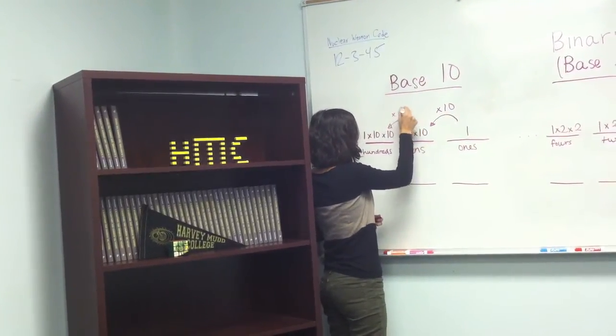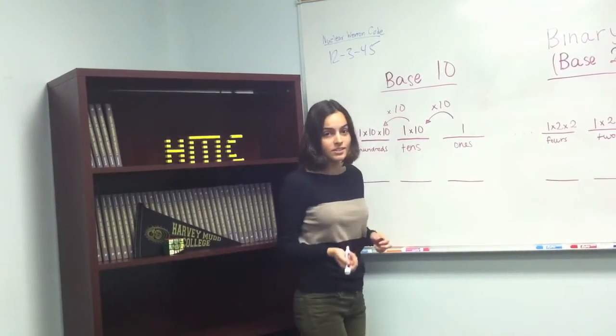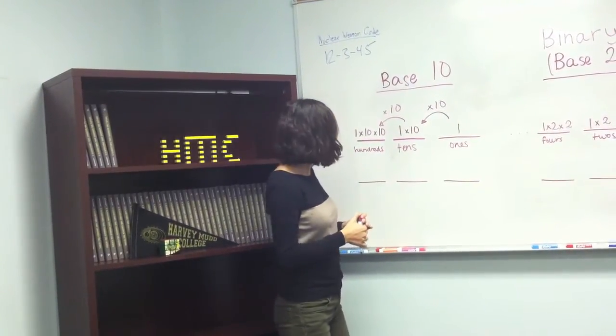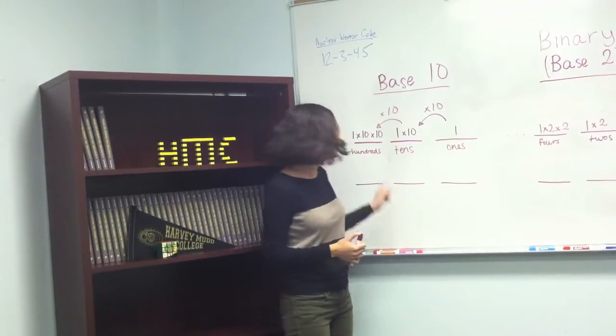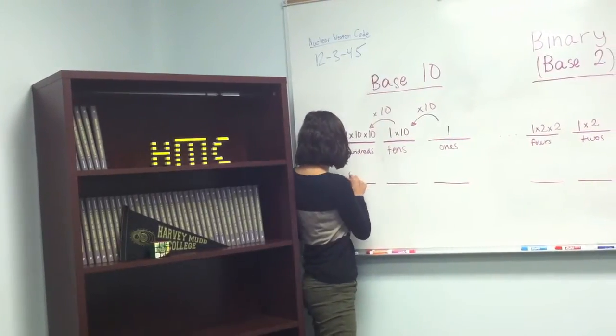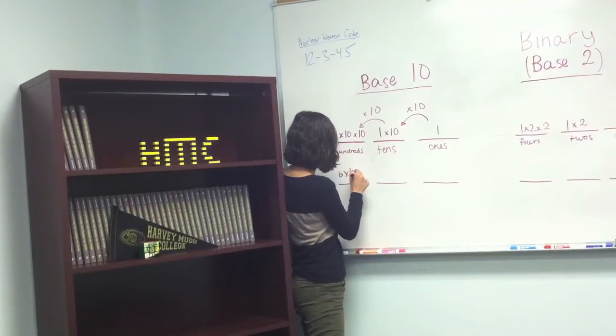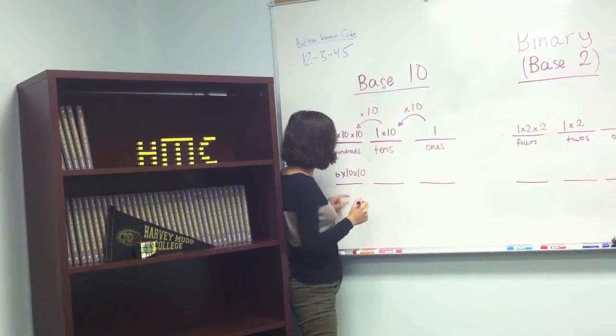So let's say we wanted to represent the number 642. Well, the largest placeholder we can use is the hundreds place. So we take 6, and we multiply it by 10, and by 10 again, which gives us 600.